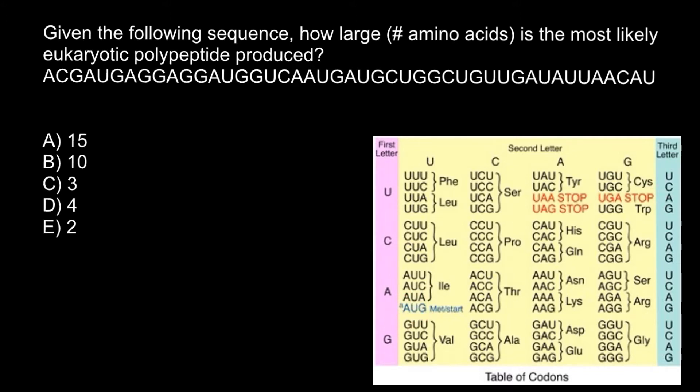...the first start codon, AUG. So we have to find this sequence, and at the same time this codon would code for the first amino acid methionine. So let's check, AUG. We are looking for AUG...